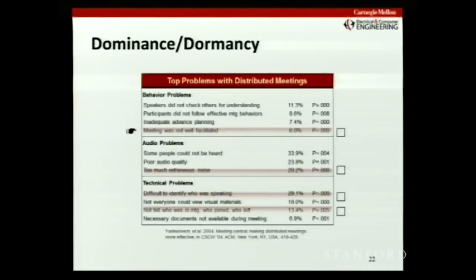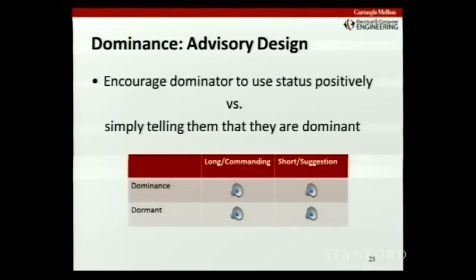The first problem we want to tackle is that the meeting was not well facilitated — people talking too much or too little. Six percent of people surveyed found it to be a problem, and a p-value of .00 indicates this highly impacted meeting effectiveness. So it's quite a significant problem.